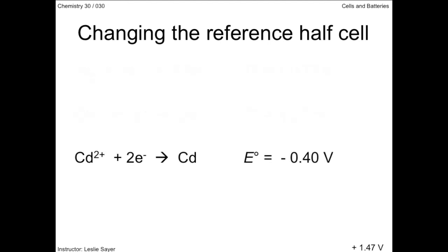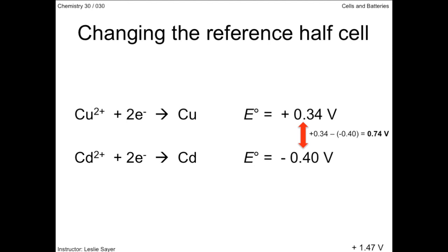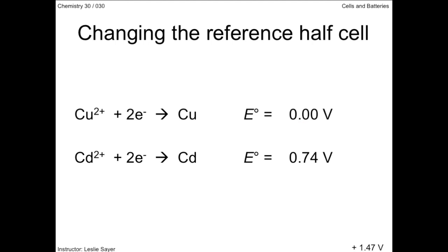Now for the cadmium half reaction. This is how it appears in your data booklet when hydrogen is the reference cell. The difference between the cadmium and the copper half reactions is 0.74 volts. When copper is the reference half cell, there is still 0.74 volts between it and the cadmium half reaction. So the cadmium half cell potential is 0.74 volts, and since cadmium is positioned below the copper reference half cell, the reduction potential for the cadmium half reaction is negative 0.74 volts.